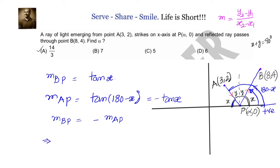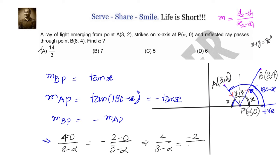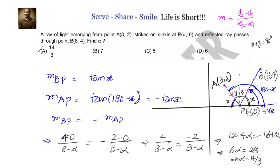Using slope = (y₂ − y₁)/(x₂ − x₁), we write: slope of BP = (4 − 0)/(8 − α), and slope of AP = (2 − 0)/(3 − α). Setting slope of BP = −(slope of AP): 4/(8 − α) = −2/(3 − α). Simplifying: 12 − 4α = −16 + 2α, so 6α = 28, giving α = 14/3. Both methods yield the same answer.